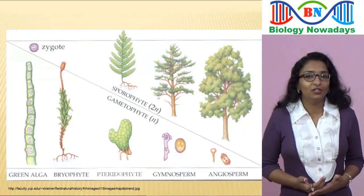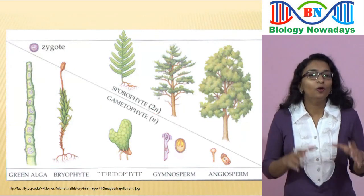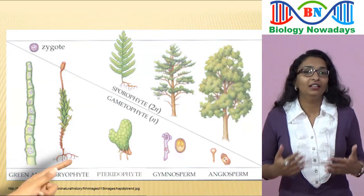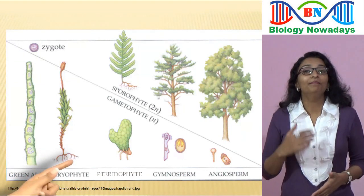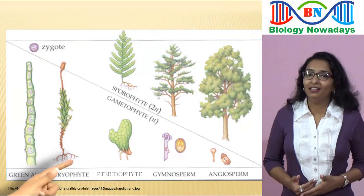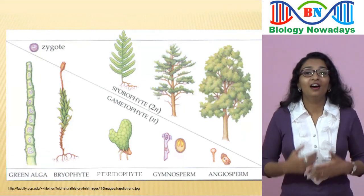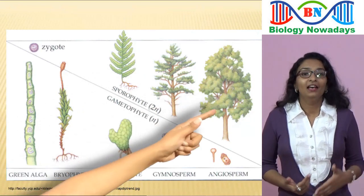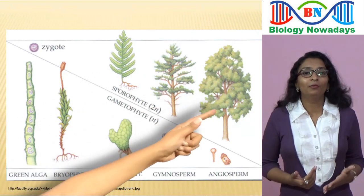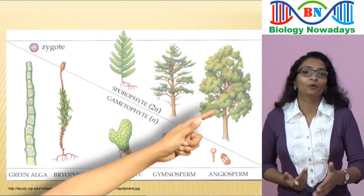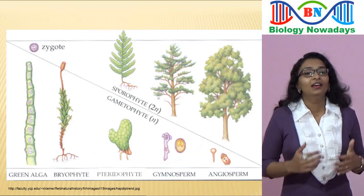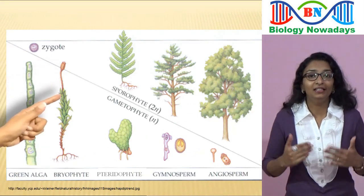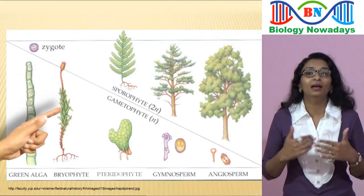In this picture, you can see that in the lower plant groups like algae and bryophytes, the haploid gametophyte is the main plant body, while in pteridophytes and in higher plant groups like gymnosperms and angiosperms, the main plant body is diploid and sporophytic. In bryophytes, the sporophyte is attached and nutritionally dependent on the gametophyte.